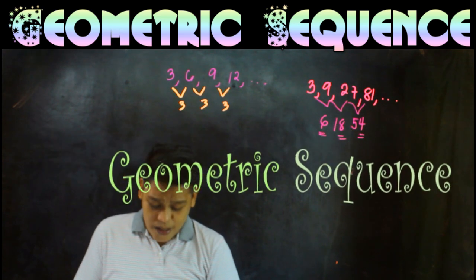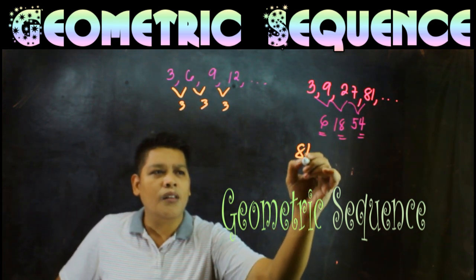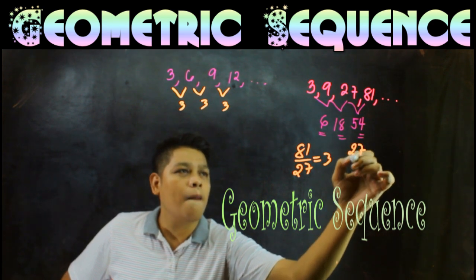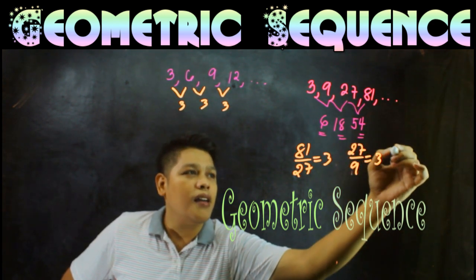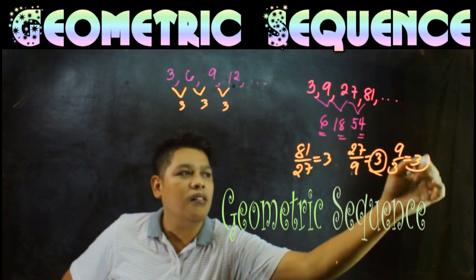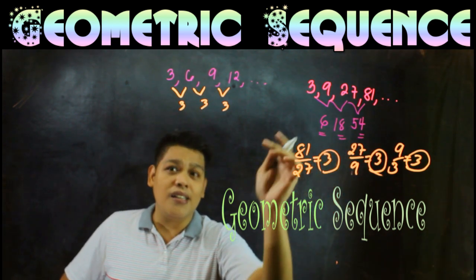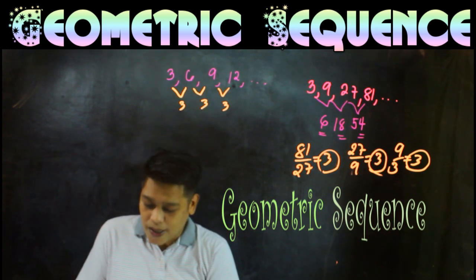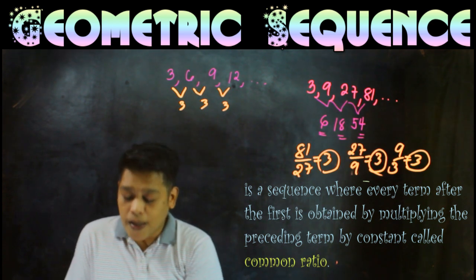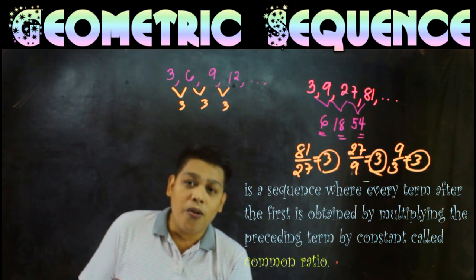For geometric sequence, it has a common ratio. When we say common ratio, 81 divided by 27 is 3, 27 divided by 9 is 3, and 9 divided by 3 is 3. So we have what we call a common ratio when it's a geometric sequence. A geometric sequence is a sequence where every term after the first is obtained by multiplying the preceding term by a constant called the common ratio.